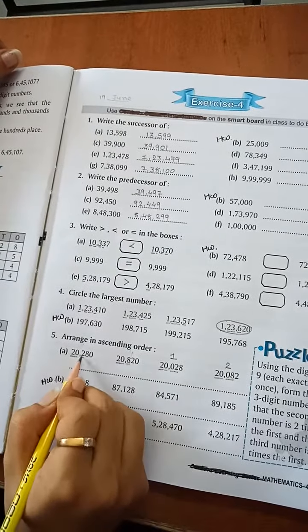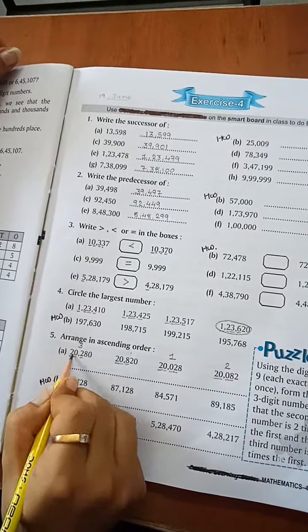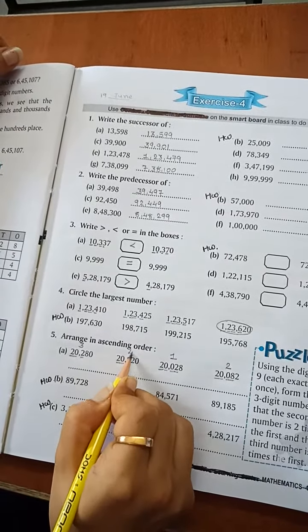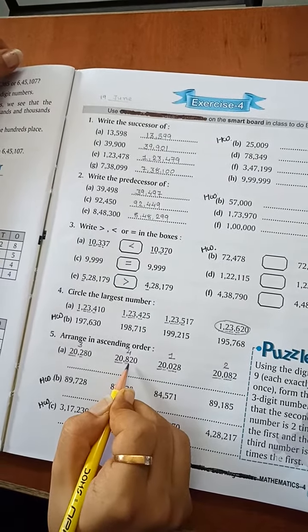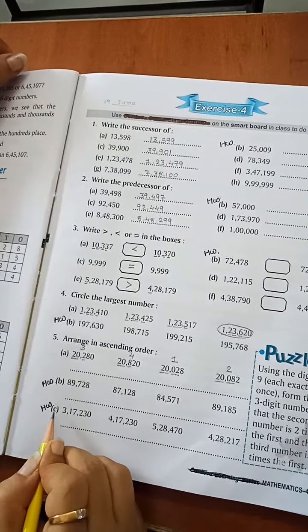At third place, 20,280. And at fourth place, 20,820. Homework.